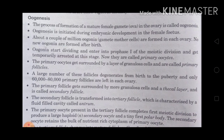Oogonia start dividing and enter into the prophase of the first meiotic division and get temporarily arrested at this stage. At this point, they are called primary oocytes.